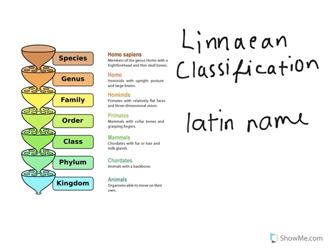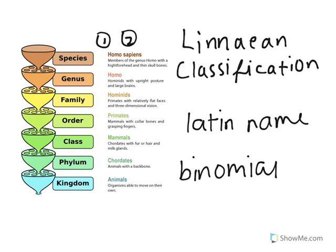The other important part is that it's binomial. Binomial classification just means that we have a two-part scientific name. If we look at this example on the side, Homo sapien is our two-part name. Homo is our first part and sapiens is our second part. So this is our binomial scientific name for humans.